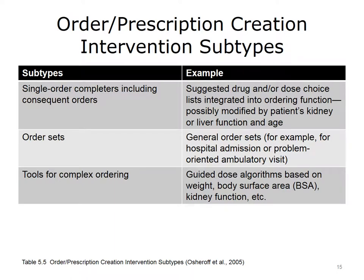The benefit of order and prescription creation facilitators is to promote adherence to standards of care by making the right thing the easiest to do. Subtypes and examples in Table 5.5 include: single order completers including suggested drug and dose choice lists integrated into ordering function possibly modified by patient's kidney or liver function and age; order sets such as general order sets for hospital admission or problem-oriented ambulatory visit; and tools for complex ordering such as guided dose algorithms based on weight, body surface area, kidney function, etc.